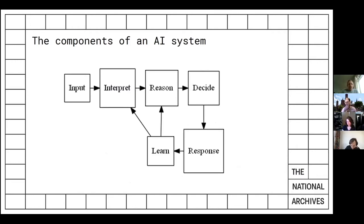An AI system, for me, is a system that takes some input, interprets that input, reasons over what it's interpreted, and then makes some kind of decision. There will be some response to that decision, and it learns from what it's experienced. We're really going to focus on the learning aspect, but machine learning actually fits mostly on the interpretation side. In many GLAM applications, that's exactly what we're doing — interpreting documents or images — with very little reasoning or decision-making.